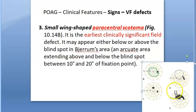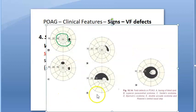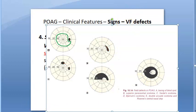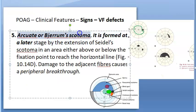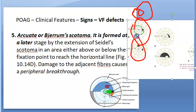Fourth: Seidel's scotoma. With passage of time, the paracentral scotoma joins with the blind spot and forms a sickle-shaped scotoma known as Seidel's scotoma. It joins with the blind spot creating this sickle shape. Remember — whether superior or inferior, these scotomas do not cross the horizontal raphe line. This is also called the arcuate or Bjerrum's scotoma area.